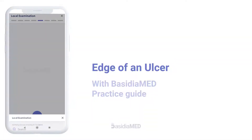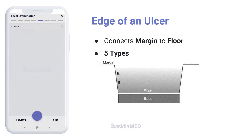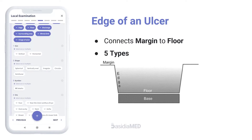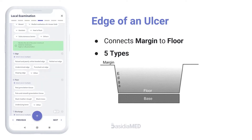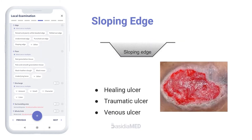Edge of an ulcer is that part of the ulcer which connects the floor of the ulcer to the margin. Five common types of ulcer edge are seen in surgical practice.